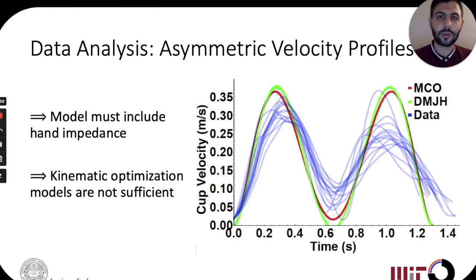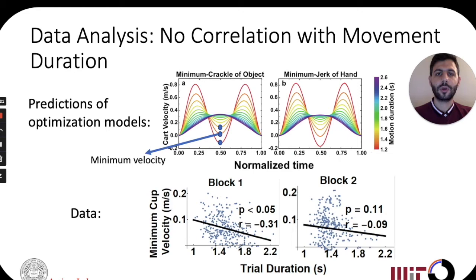Data analysis revealed that contrary to the predictions of the optimization-based models, the velocity peaks were not equal. The second observation also contradicted the predictions of the optimization-based models, which predicted that the minimum velocity between the two peaks would become more negative as the movements became faster, something which was not actually observed in the data.